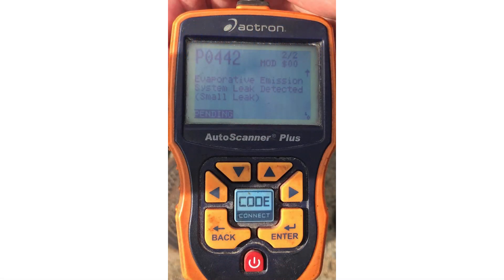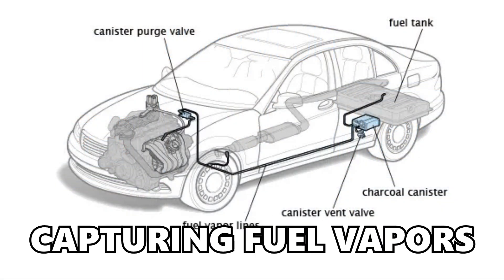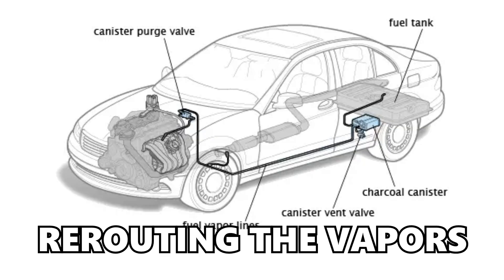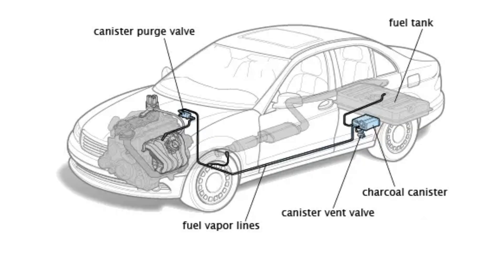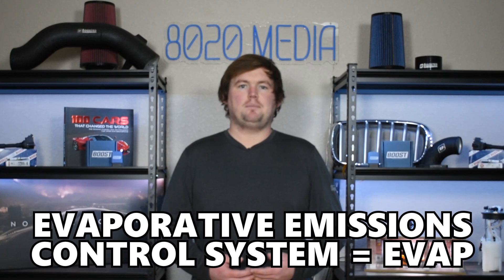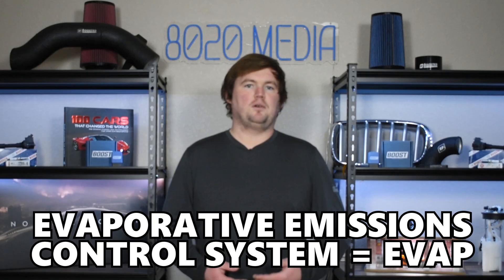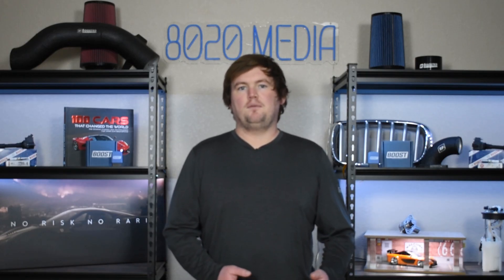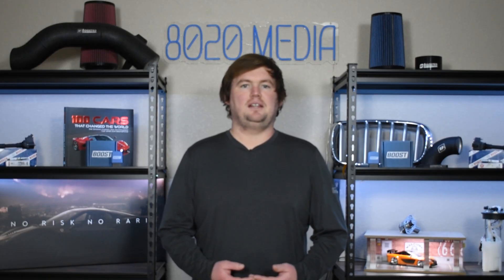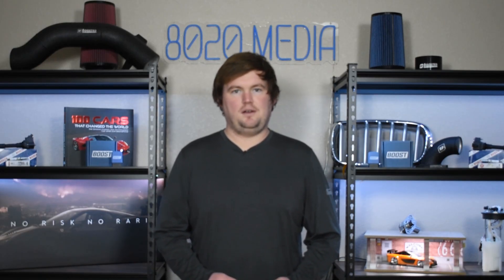Fault Code P-0442 indicates an evaporative emission control system leak. The EVAP system in your vehicle is responsible for capturing fuel vapors and rerouting them back to the vehicle's intake tract, where they enter the cylinders and burn during the normal combustion process. Anytime you have an EVAP system leak, the PCM or ECU will pick up on that, trigger Fault Code P-0442, and indicate that you have a leak from the evaporative emission control system.